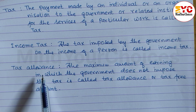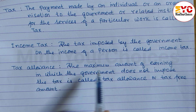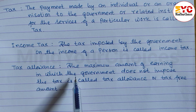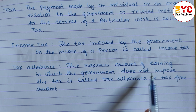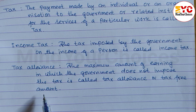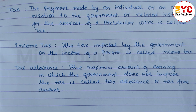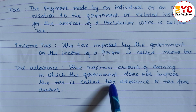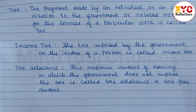Tax allowance means the tax-free amount. The maximum amount of earning in which the government does not impose tax is called tax allowance or tax-free amount. In Nepal, whether you earn 10,000 or 5 lakhs in a year, there is no tax-free amount or tax allowance — even earning 5,000 requires paying 1% tax.